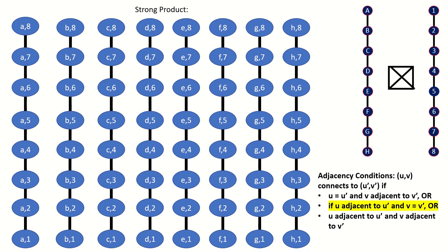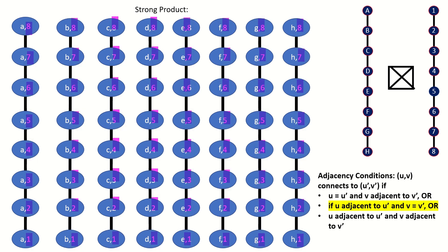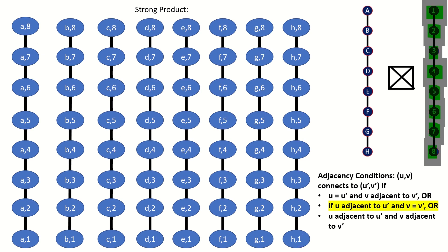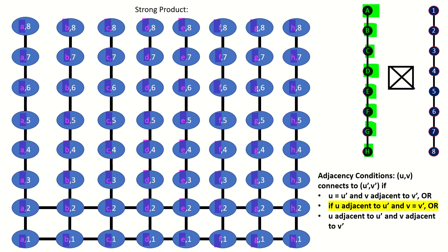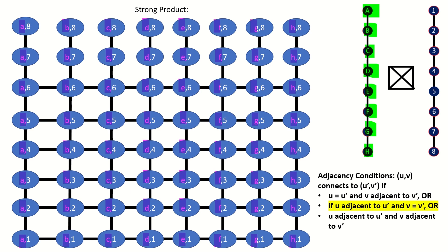According to the second adjacency rule for strong products, two vertices in the strong product are connected if their second entries — their numbers — are the same vertex in the second graph, and their first entries — their letters — are adjacent vertices in the first graph. Consecutive letters or vertices in the first graph are adjacent, which means all strong product vertices with the same number and consecutive letters will connect. This means each vertex in a row will connect to the vertices one step to the right and one step to the left in that row — exactly the property of a king's legal moves, where a king can travel to any square in an adjacent column but in the same row.